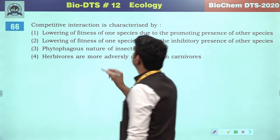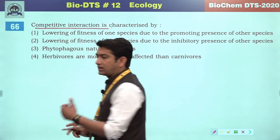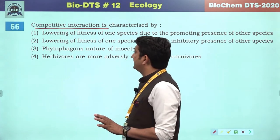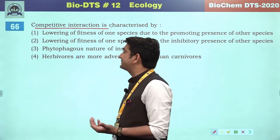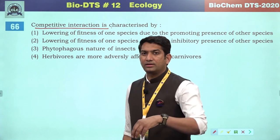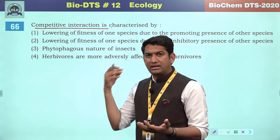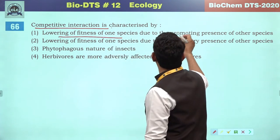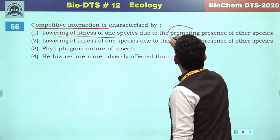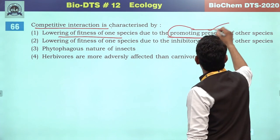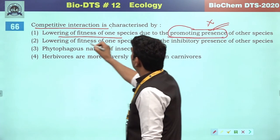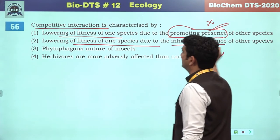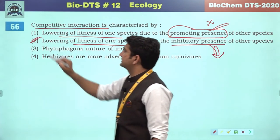Competitive interaction is characterized by — if two organisms survive in a particular habitat with competitive interaction, the biotic potential will be low in the presence of another. Lowering of fitness due to promoting presence is never allowed in competition — incorrect. Lowering of fitness of one species due to inhibitory presence — definitely correct reference. The second will be the correct answer.